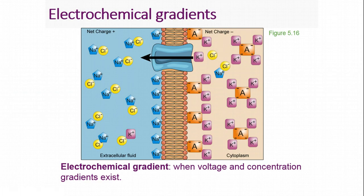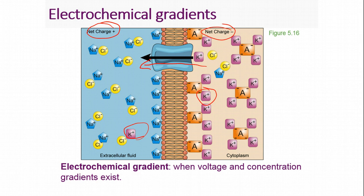Another layer is when there is a voltage gradient as well as a chemical concentration gradient — this is called an electrochemical gradient. Inside the cell there is a slight net negative charge, and outside the cell a slight net positive charge. There is much more potassium inside the cell than outside — the potassium concentration gradient makes it want to move outside. However, potassium is positively charged, and since there's a positive charge outside, that will repel the movement of potassium. So even though the concentration gradient favors movement out, the electrical charge opposes it — this is an electrochemical gradient.